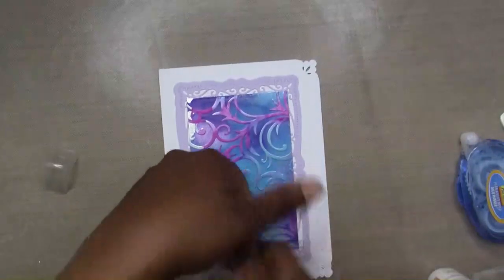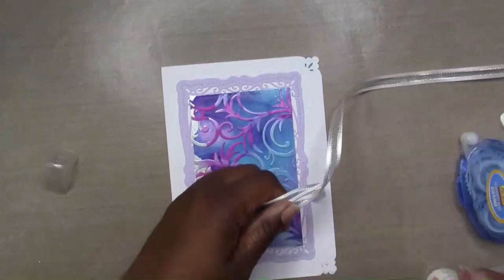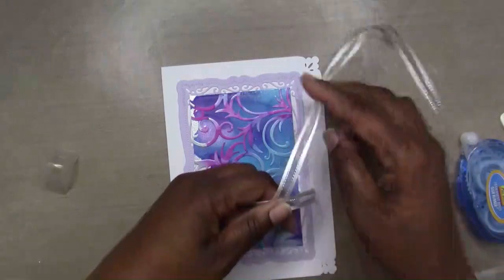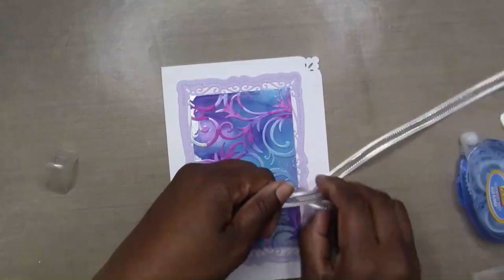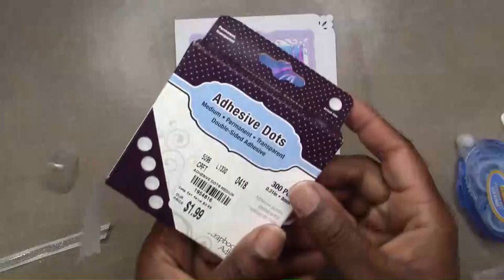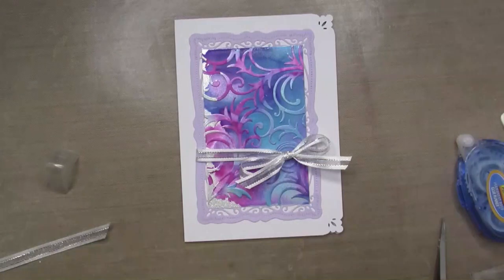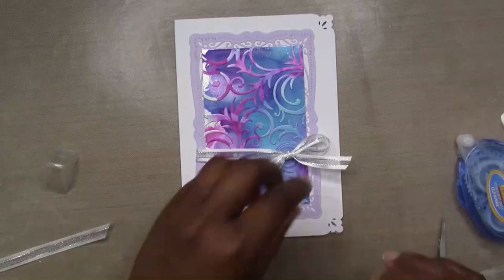Next I'm just going to tie a small bow to the front of my card, and next I'm going to use an adhesive sticky dot to just hold my bow in place so that it does not come loose.